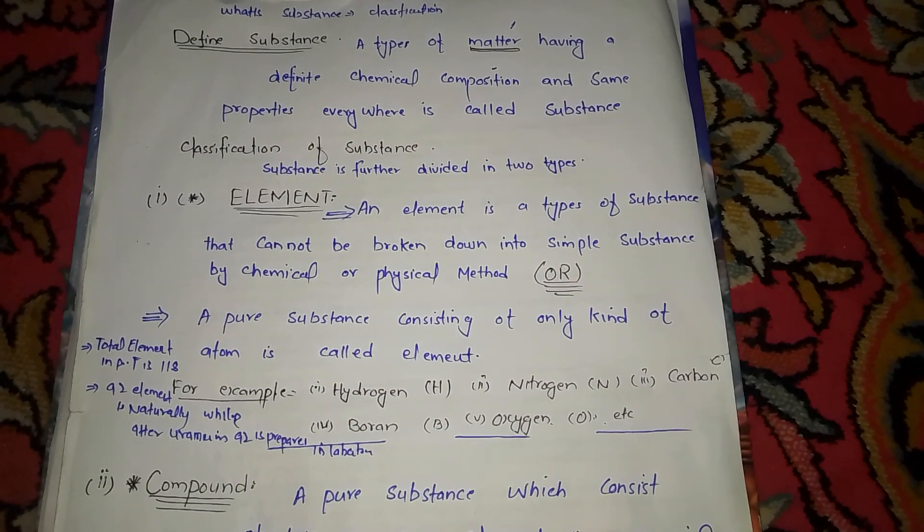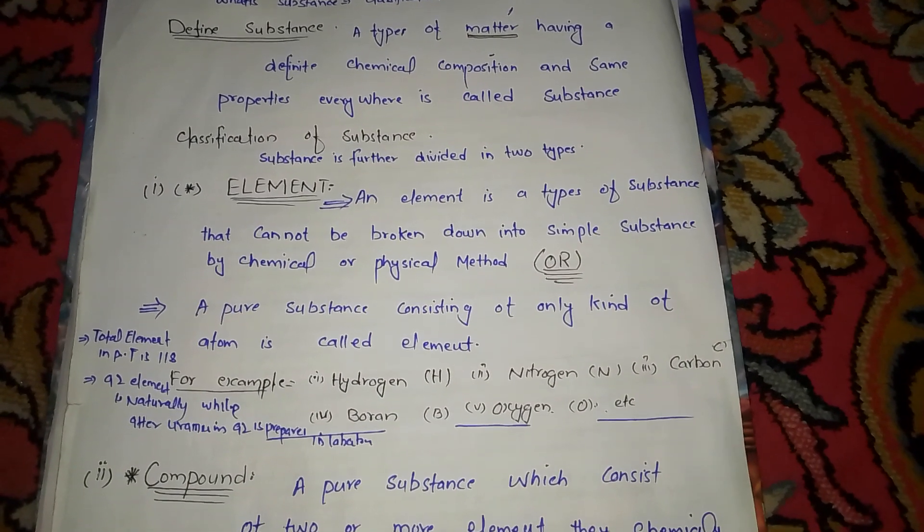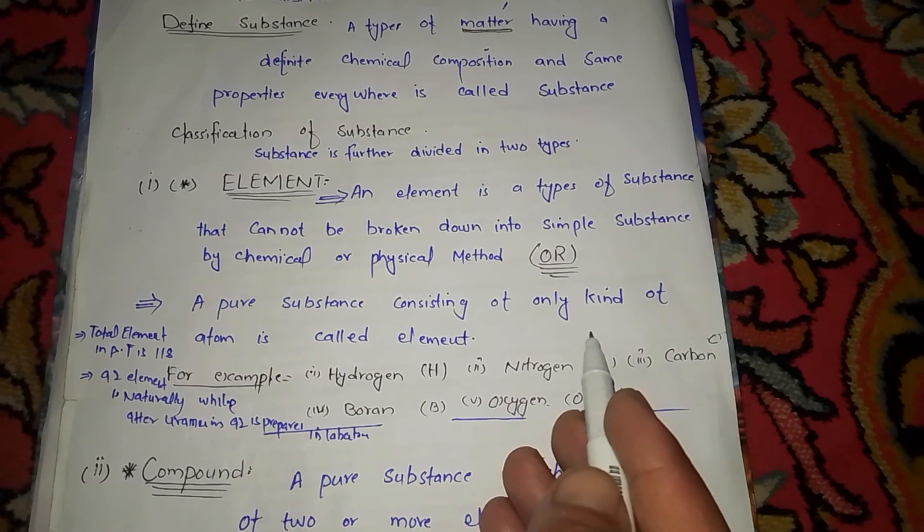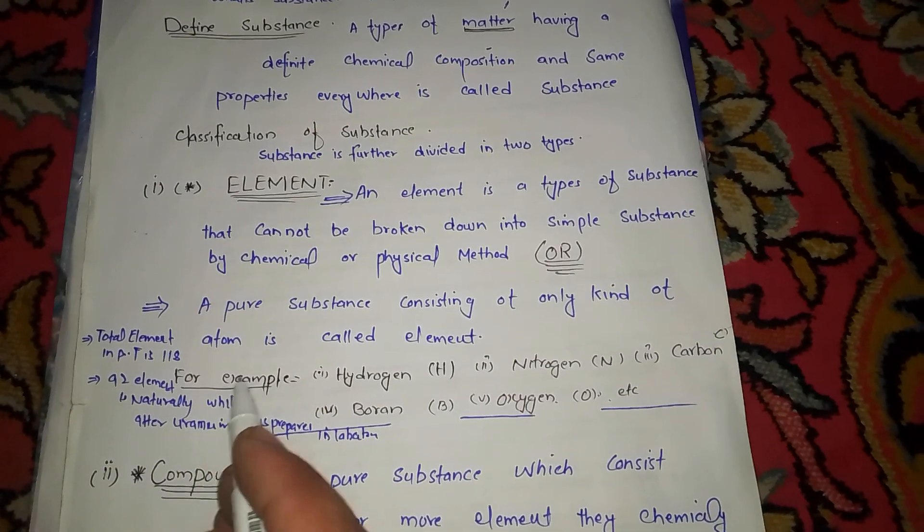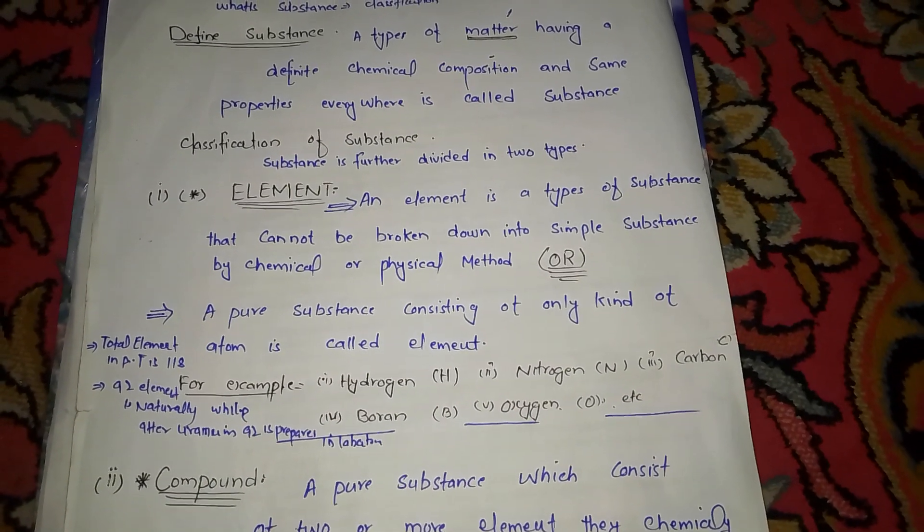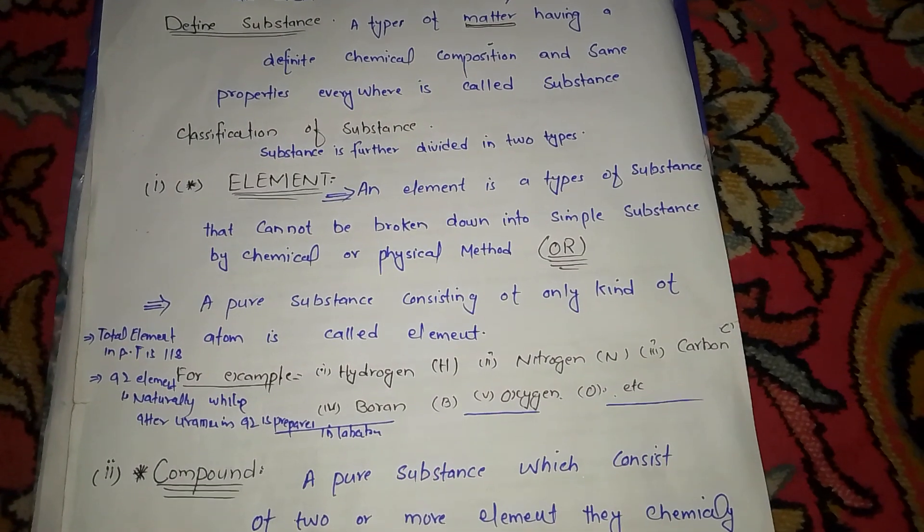Or, a pure substance consisting of only one kind of atom is called element. For example: hydrogen, oxygen, nitrogen, carbon, boron, etc.